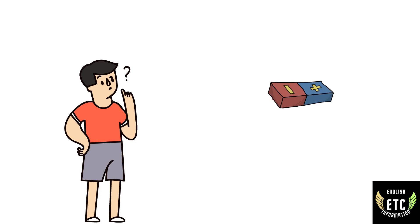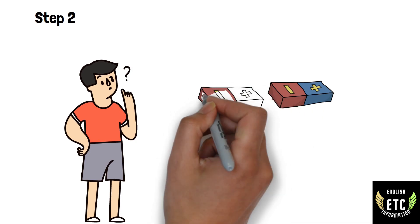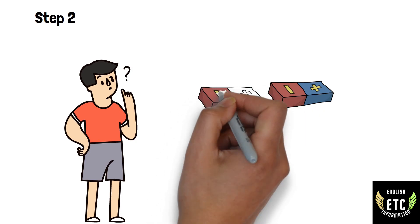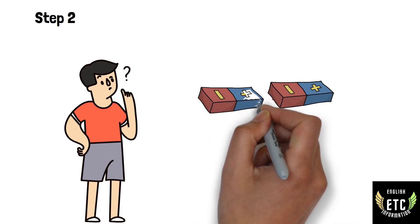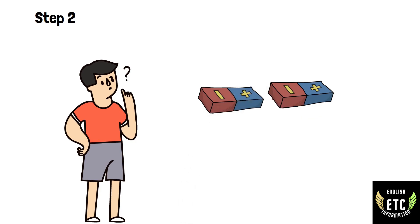In step two, imagine two magnets are together. Think of placing two magnets close to each other. When you try to put them together, they either attract each other or repulse each other.